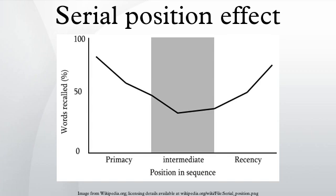The primacy effect is reduced when items are presented quickly and is enhanced when presented slowly. Longer presentation lists have been found to reduce the primacy effect. One theorized reason for the recency effect is that these items are still present in working memory when recall is solicited. Items that benefit from neither are recalled most poorly.